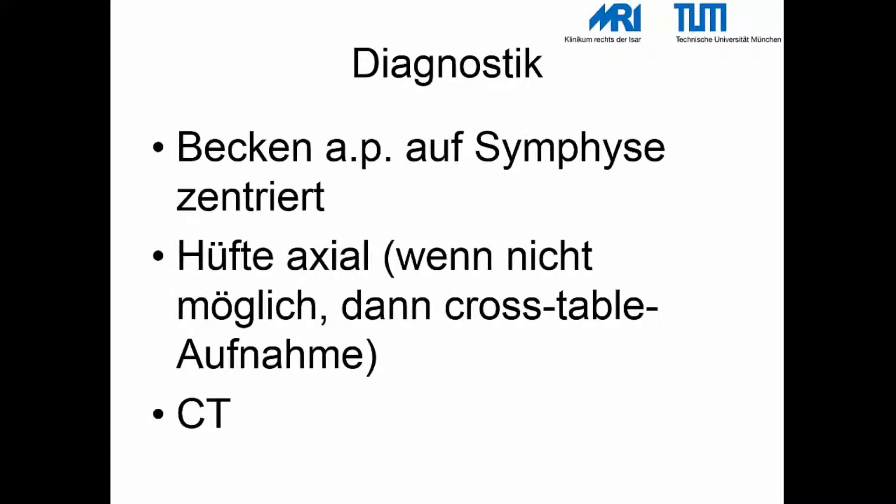Gleichzeitig soll die Lebensqualität bei möglichst wenig Schmerzen und einer optimalen Gelenkfunktion erhalten bleiben. Weist die Sturzanamnese und die typische Schonhaltung in Außenrotation und Verkürzung des Oberschenkels auf eine proximale Femurfraktur hin, so sollte als Übersichtsaufnahme eine AP-Röntgenaufnahme des Beckens erfolgen. Axiale Aufnahmen sind klinisch sinnvoll, schmerzbedingt aber meist nicht möglich. Bei Unklarheiten ist die Indikation zur Schnittbildgebung großzügig zu stellen.